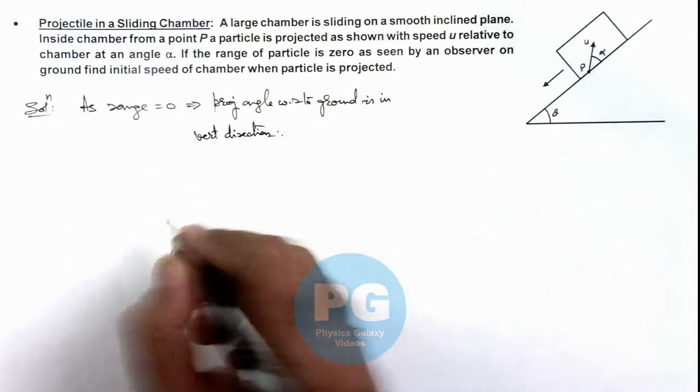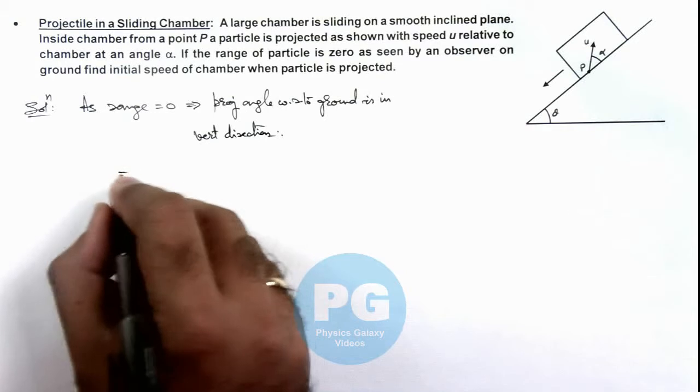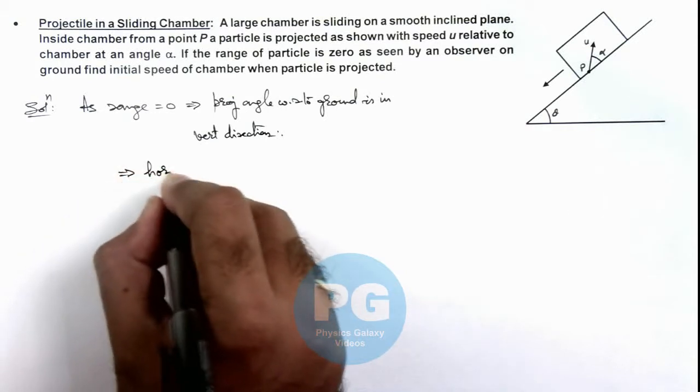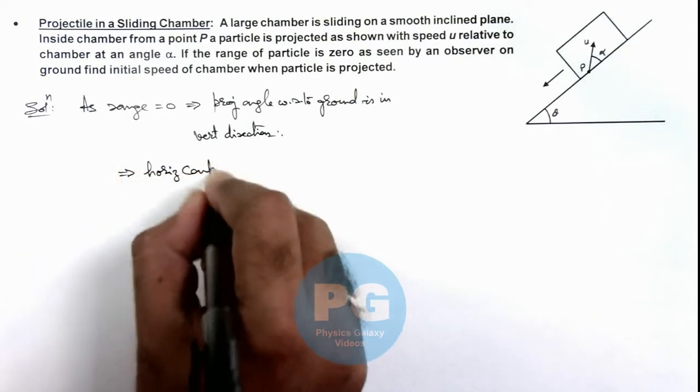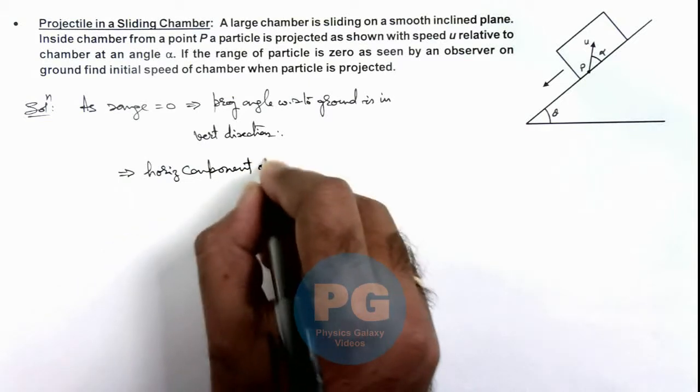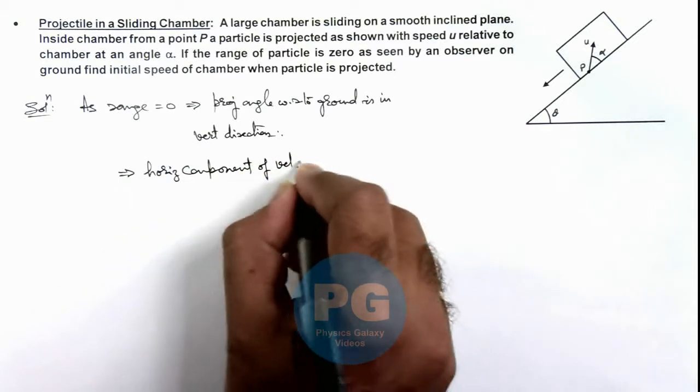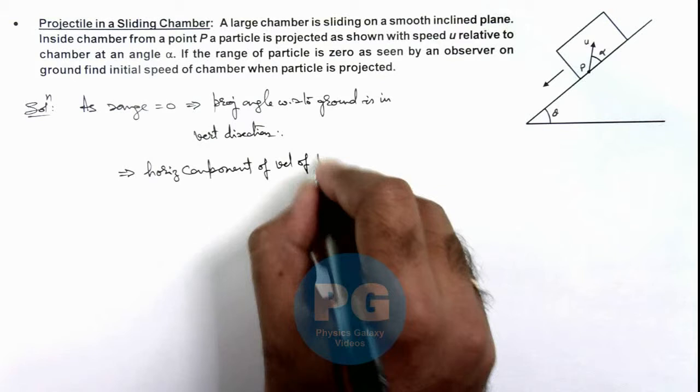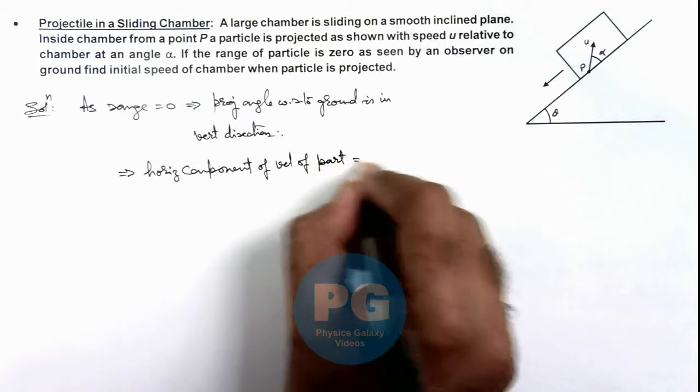So here we can write, this implies horizontal component of velocity of particle should be equal to zero.